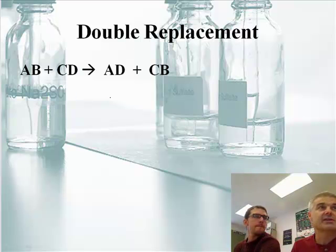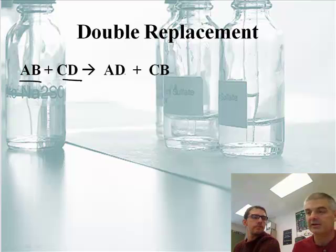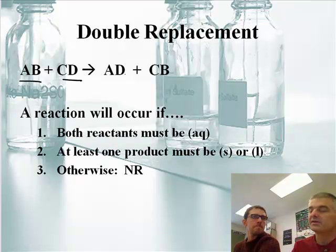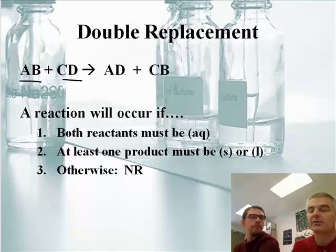So on double replacement reactions, this is the reaction, as you recall, AB plus CD. So you have two couples that go to the dance and they trade partners. Yep. Okay, and now this is, the big question is, does the reaction even occur? Right. There are three tests that you have to determine whether or not the reaction will take place.